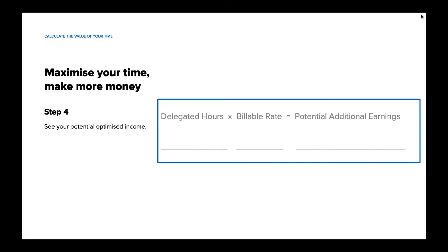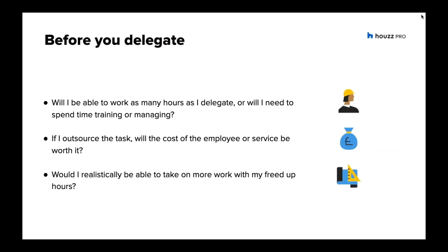The number of hours you spent working on things that could have been delegated represents time you could be using to generate more revenue. Take the total number of hours spent on delegatable tasks and multiply that by your revenue generated per billable hour — that result will show you your theoretical potential additional earnings each year, if you're able to find enough work to fill that time. Depending on your rate and how many hours you could be outsourcing, you may have a substantial amount of potential additional earnings. To help you calculate the value of your time, we have created a handout — you can download this in the link in the description and in the email you received for this webinar.